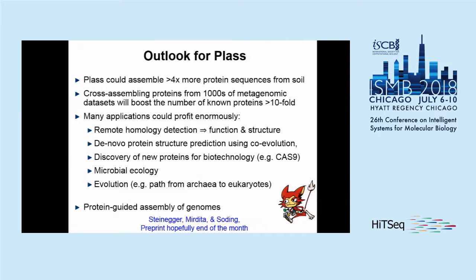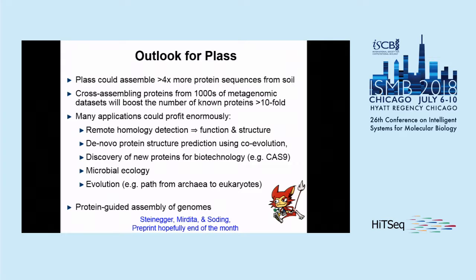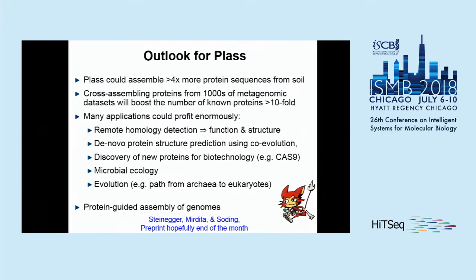We think PLASS might be a good way to extract protein sequences from very diverse environments where genome assemblers have a hard time capturing diversity. PLASS can also do cross-assembly of very large datasets because it uses the LinClust algorithm. This data can be used for motif detection, protein structure prediction, and so on. We hope a preprint will be out by the end of the month.